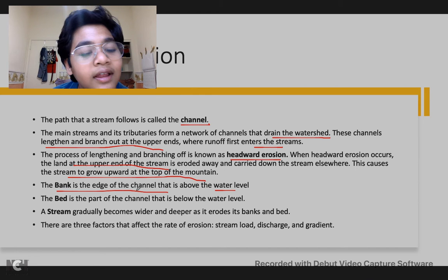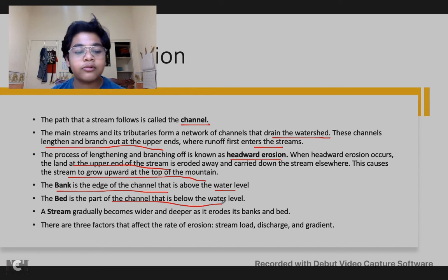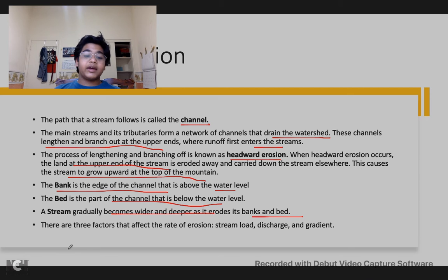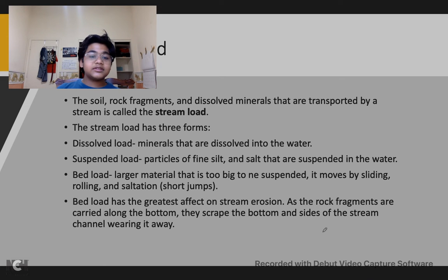The bank is the edge of the channel that is above the water level, and the bed is the part of the channel that is below the water — bank up, bed down. The stream gradually becomes wider and deeper as it erodes the banks and bed. There are three factors that affect the rate of erosion: stream load, discharge, and gradient.